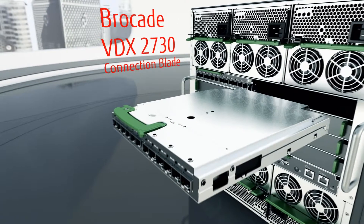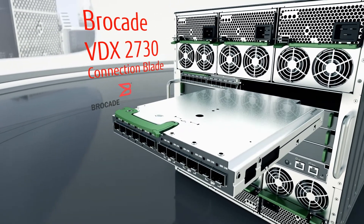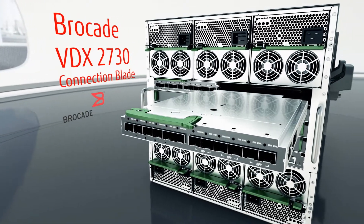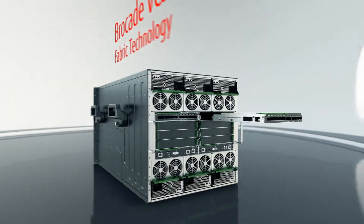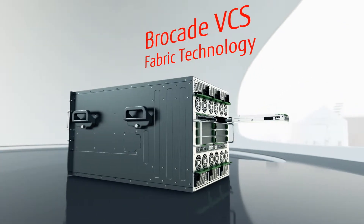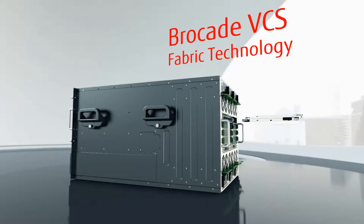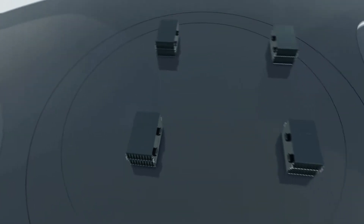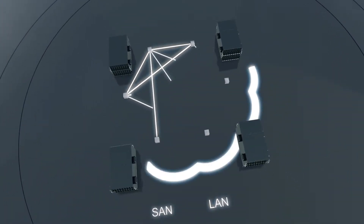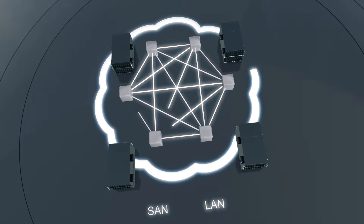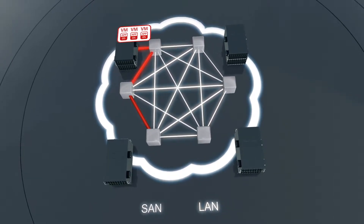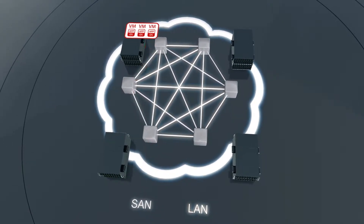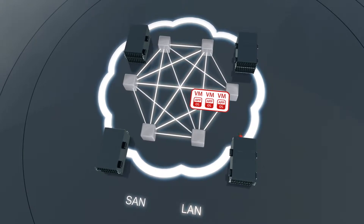The embedded Brocade VDX2730 connection blade is a 10 gigabit Ethernet switch with both LAN and native Fiber Channel ports that support this new standard. Featuring Brocade's award-winning VCS fabric technology, VDX2730 lets you add active-active server connections across the entire Fujitsu Dynamic Fabric infrastructure without changing your existing network designs and cabling. By automatically sharing intelligence between fabric nodes, you can dramatically improve network utilization and maximize application availability in virtualized data centers.